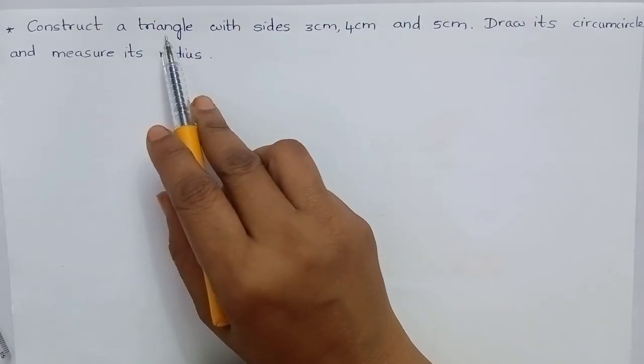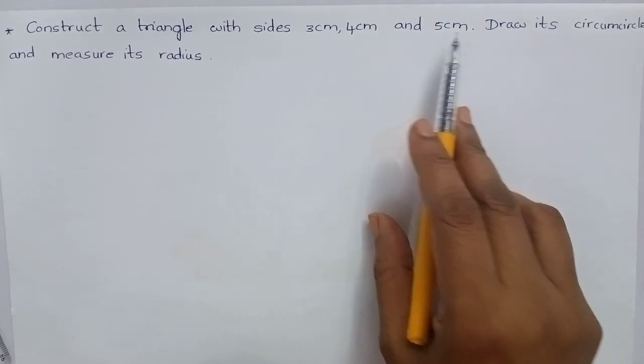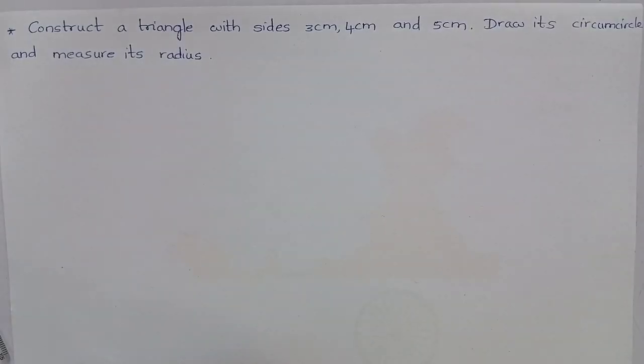Construct a triangle with sides 3 cm, 4 cm and 5 cm. Draw its circumcircle and measure its radius.